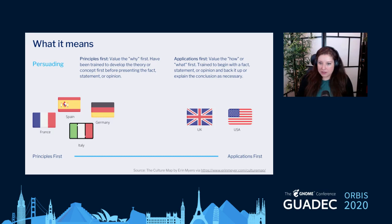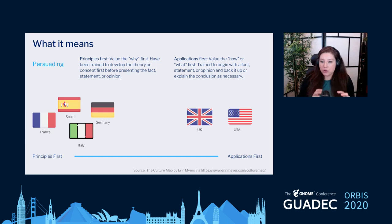Another indicator is persuading. Erin Meyer hasn't finished mapping all countries for this one, and some countries are neither principles-first nor applications-first. Principles-first cultures value the 'why' first — they develop the theory or concept before presenting facts and opinions. For applications-first cultures, they value the 'how' and 'what' first, beginning with facts and statements, then backing them up as necessary.